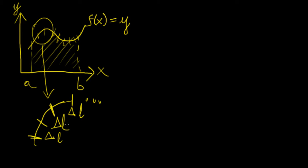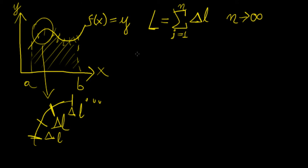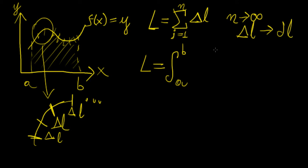Those little sections of delta-l are going to add up to the total arc length. We represent the total arc length between a and b as capital L. So L is going to be the sum of all those little contributions of length, delta-l, with a finite number n of those contributions. As n goes to infinity, because all of them have the same length, this should approach an integral. As n goes to infinity, delta-l approaches an infinitesimal quantity we call dl, and we end up with an integral of this form.